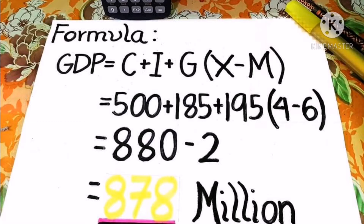So it goes like this: 500 + 185 + 195, then (4 − 6). Using order of operations, 4 − 6 equals −2, and 500 + 185 + 195 equals 880. So 880 − 2 equals 878. The total GDP expenditure of the Philippines is 878 million.